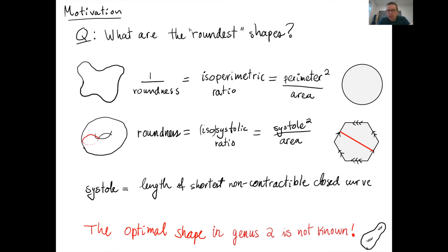Even though this is bounded, we only know the maximizer in one case, namely in genus one. In that case, the maximizer is the flat regular hexagonal torus — take a regular hexagon in the Euclidean plane and glue opposite sides by translation. It's a theorem of Loewner that this metric is optimal. The systoles are given by the closed geodesics going straight across from one side to the opposite side; there are three distinct homotopy classes of such shortest closed geodesics.